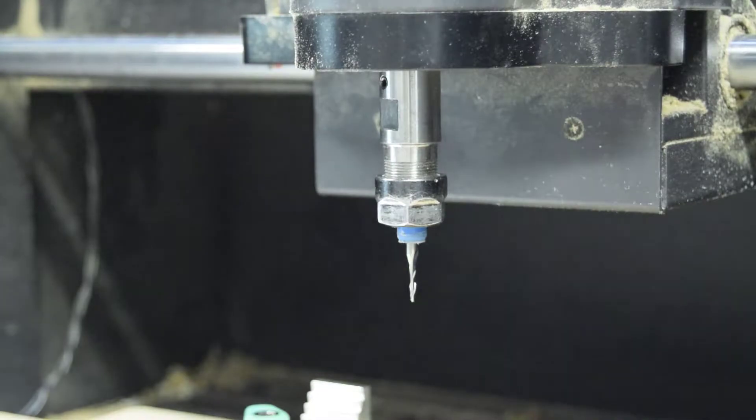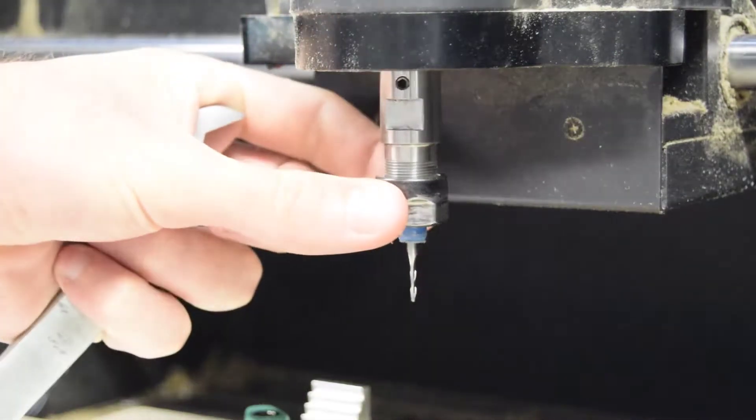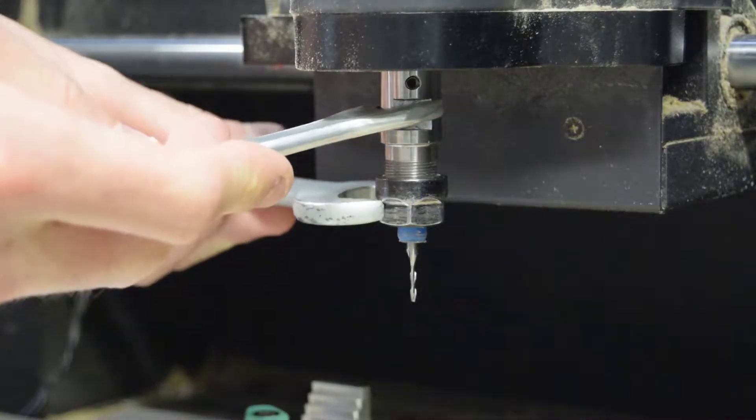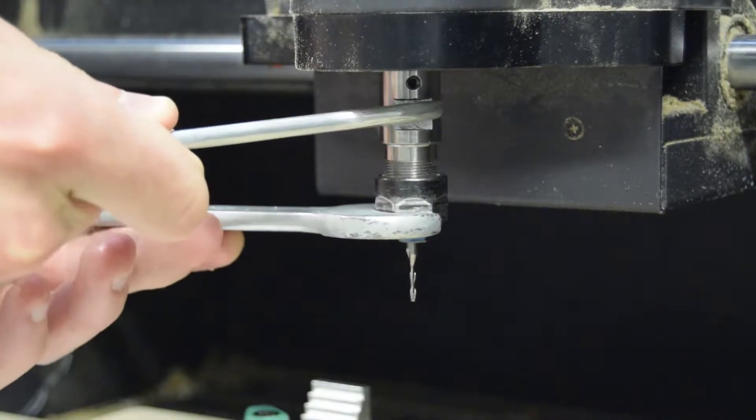Tighten further using the two available spanners. Place the smaller spanner at the top, the larger at the bottom, and rotate the bottom anti-clockwise until tight.